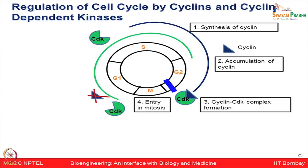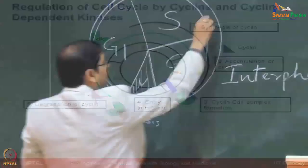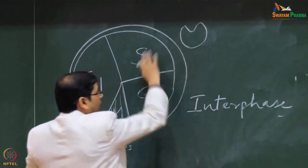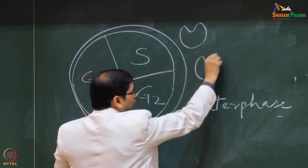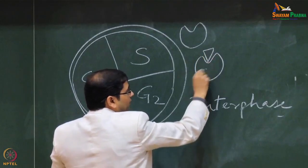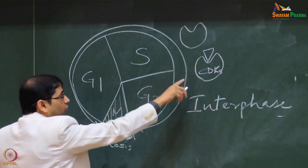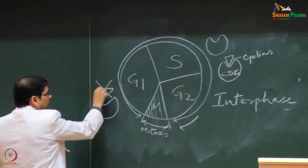Once mitosis is finished, cyclins get degraded, the CDK-cyclin complex dissociates, and CDKs are now separate. This ensures the mitotic process has finished. In summary: cyclins are synthesized in S phase, accumulate, form a complex with CDKs, allow the cell to enter mitosis, then get degraded — dissociating the CDKs and moving the cell into G1 phase.